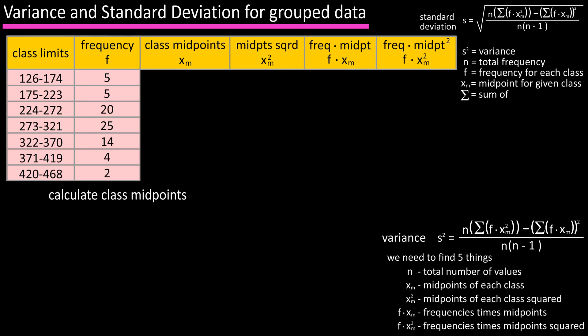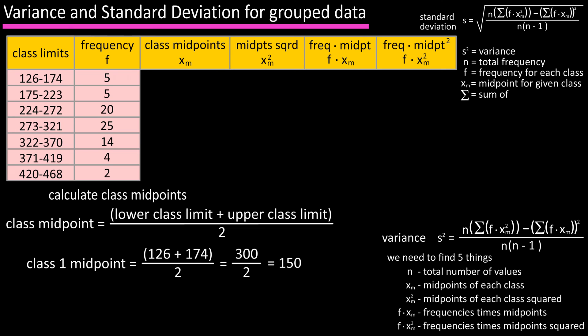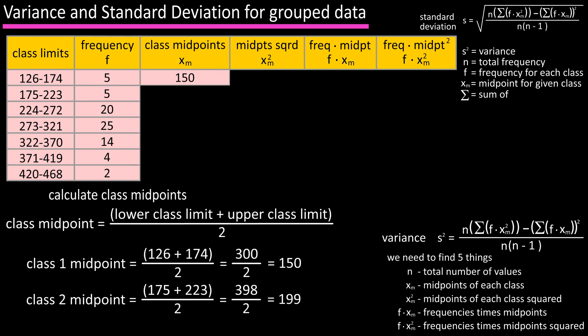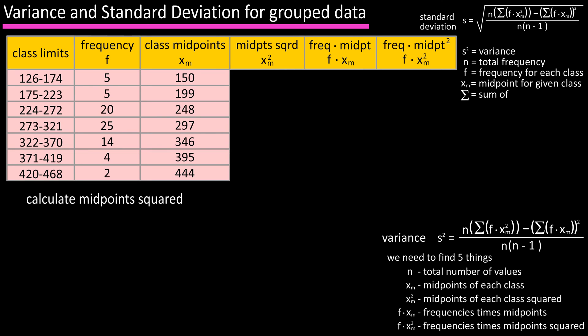To calculate the midpoint for each class, use: class midpoint = (lower class limit + upper class limit) / 2. For class 1: (126 + 174) / 2 = 300 / 2 = 150. For class 2: (175 + 223) / 2 = 199. Continue this process for the remaining classes.